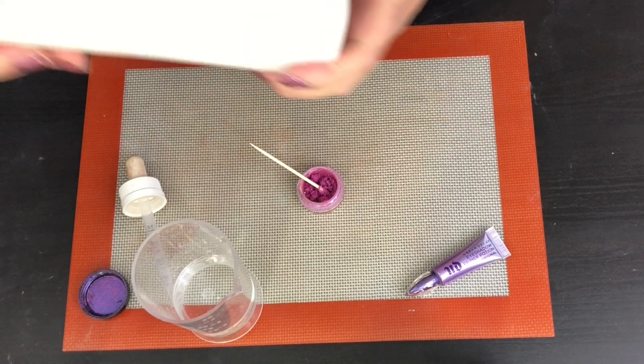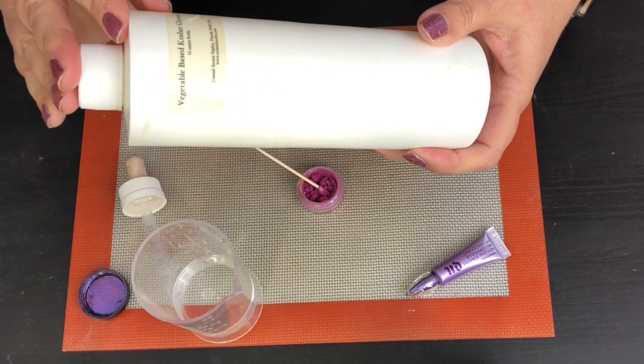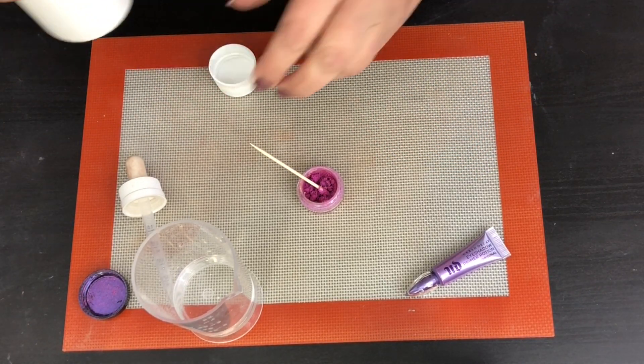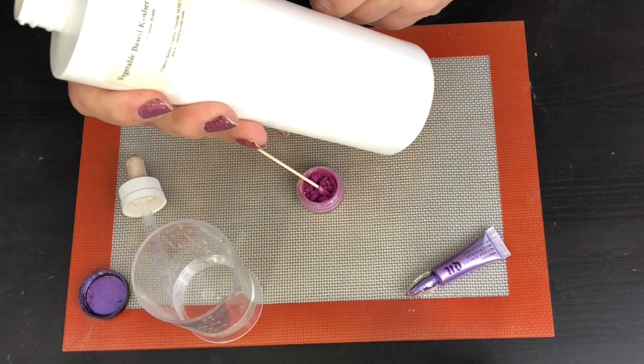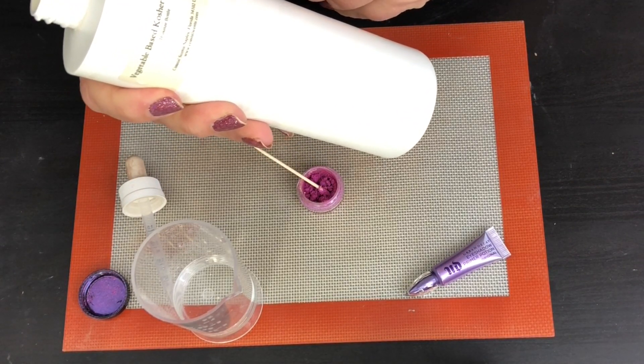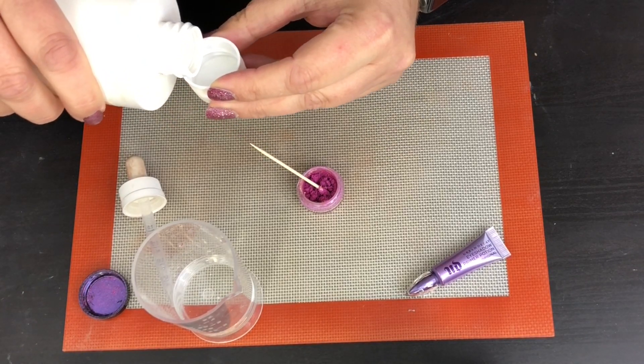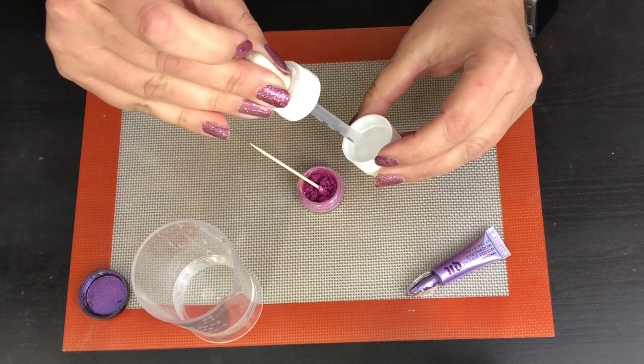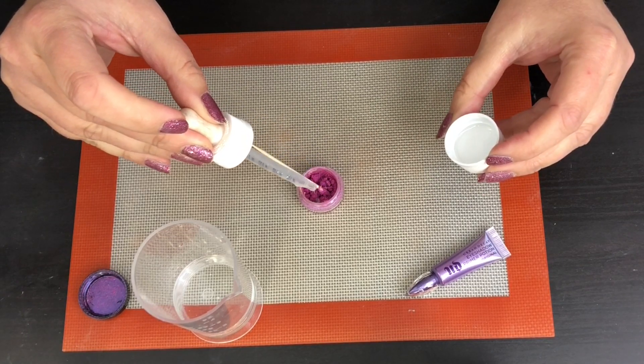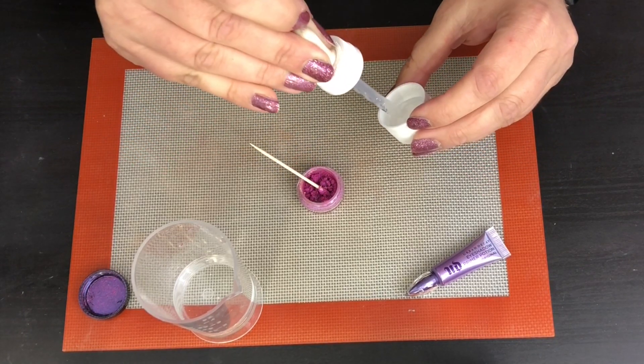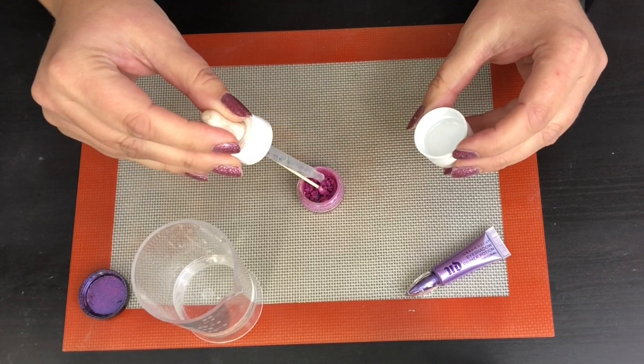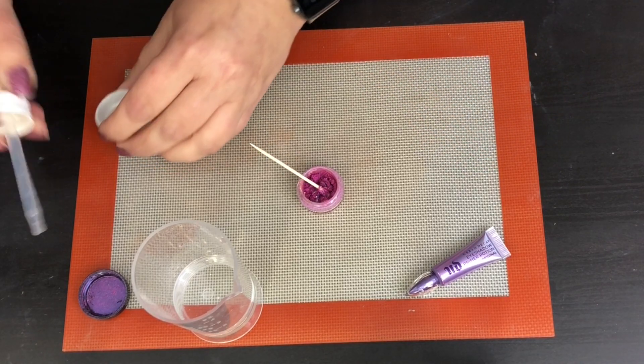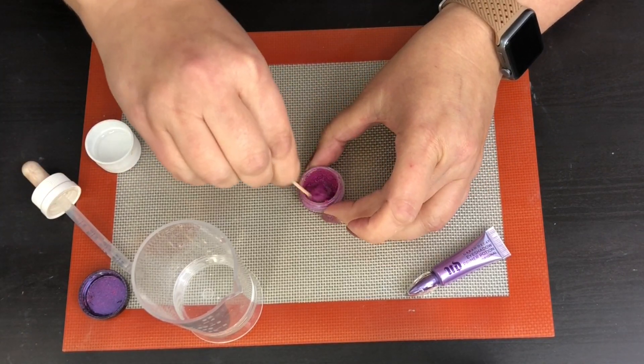Alright, next I'm going to take just vegetable glycerin. I got this from Coastal Scents back when they still sold it. I'm just going to take a little bit of this and add it. It is a natural humectant, so I find that my cream shadows don't dry out as quick as long as I put a little bit of glycerin in it. That was about six drops of glycerin.